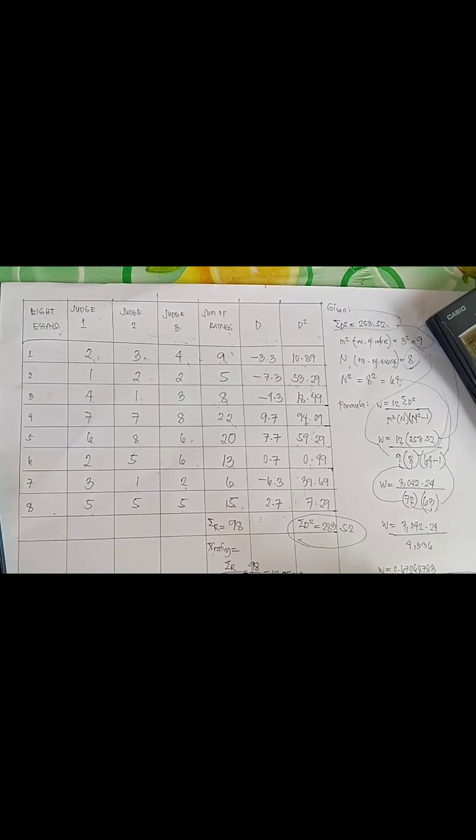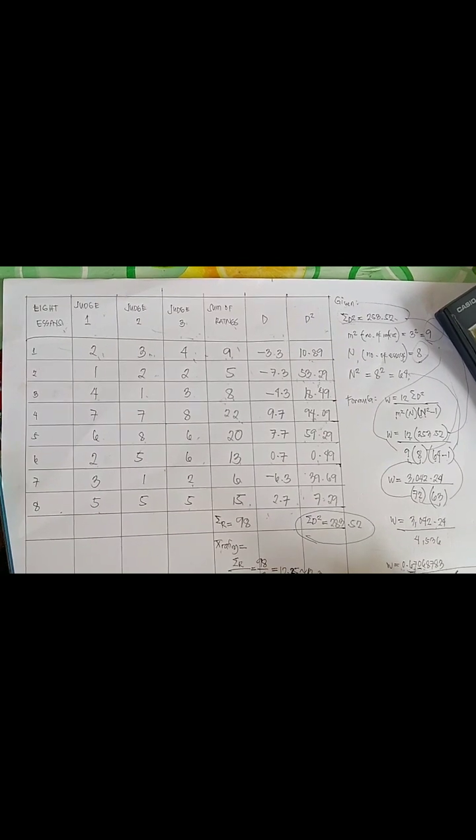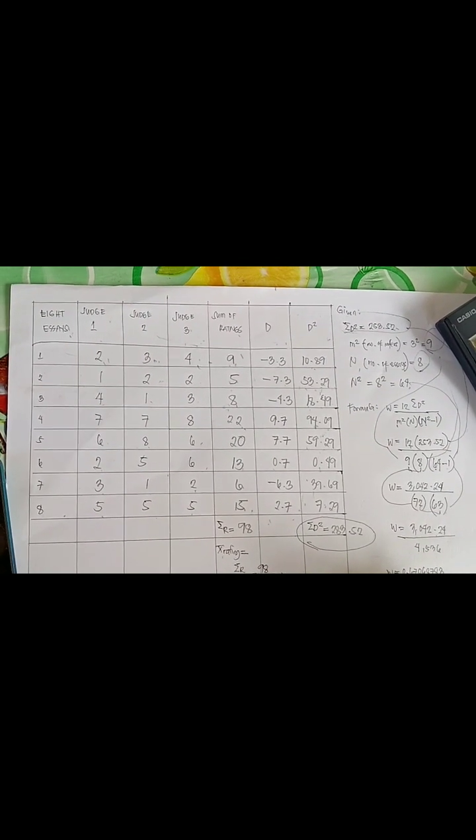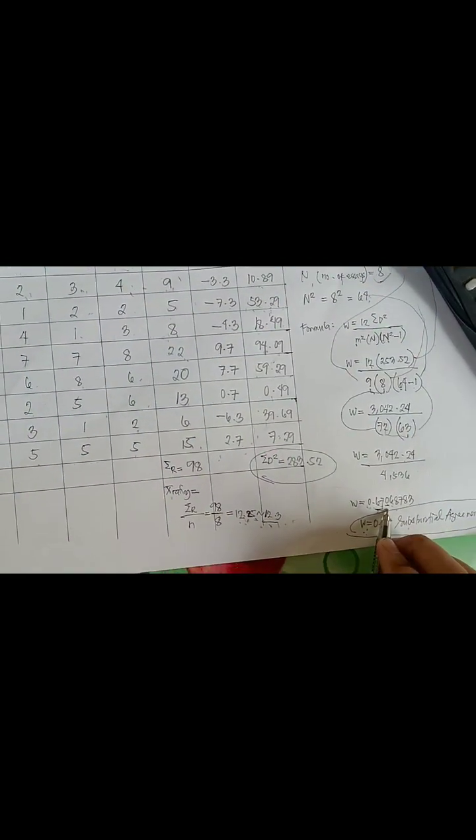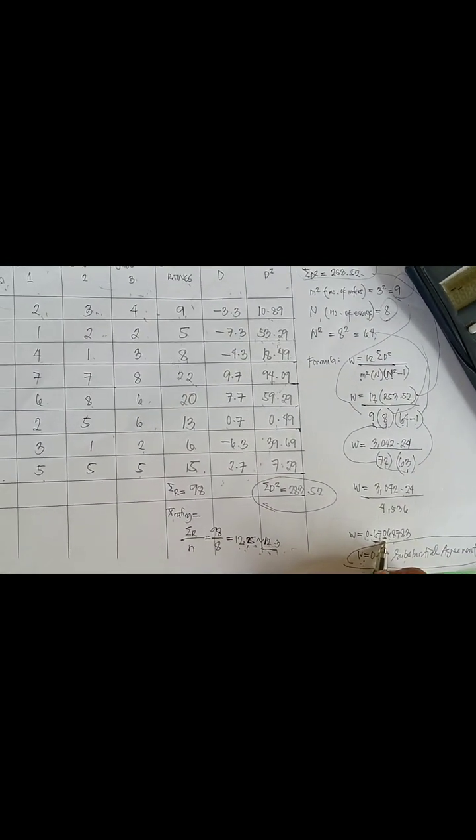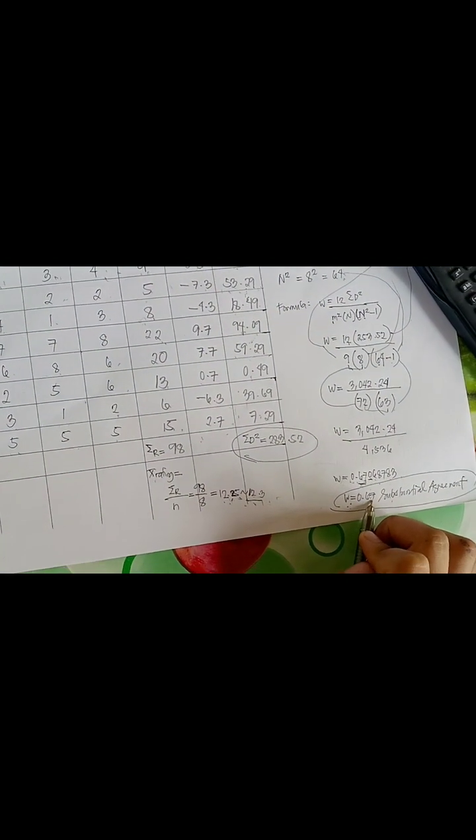Since looking back at the Kendall's W rule, it is only two digits from the decimal point. In this case, the common solution of this is to round off the numbers. But unfortunately, the next of seven is zero. So therefore, it cannot be rounded off. So the final W is equal to 0.67, and it has substantial agreement.